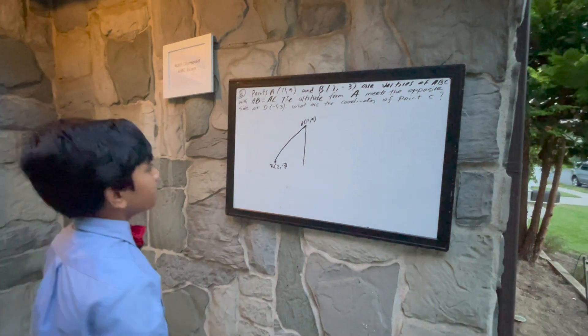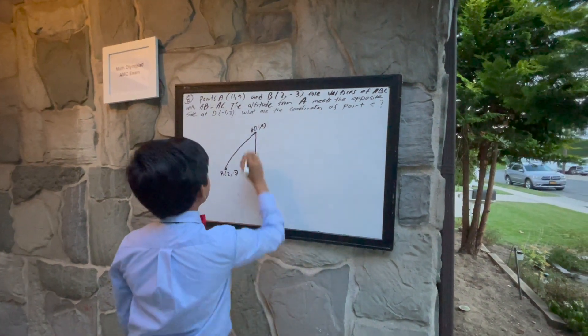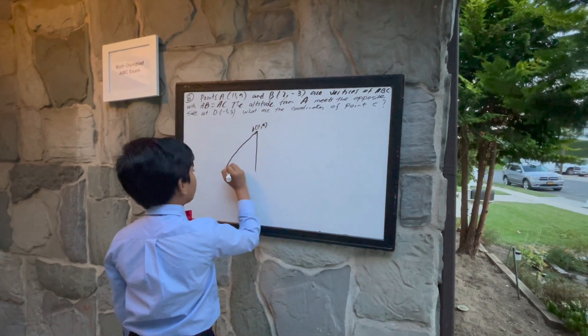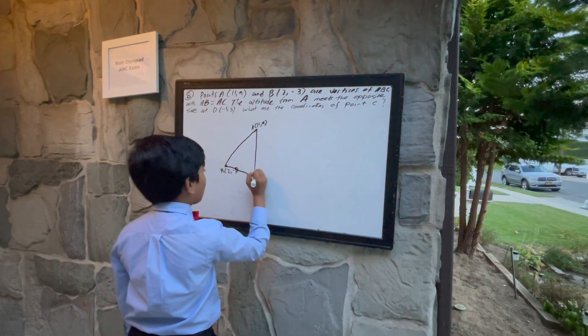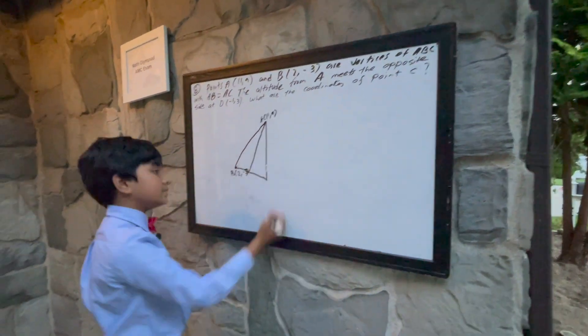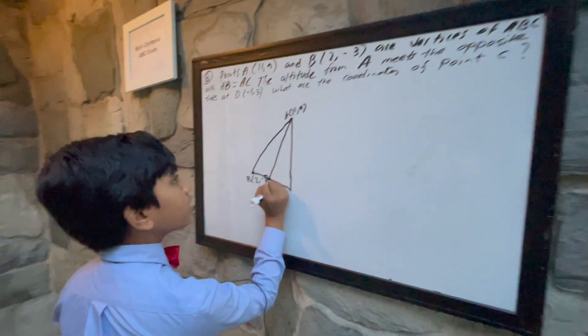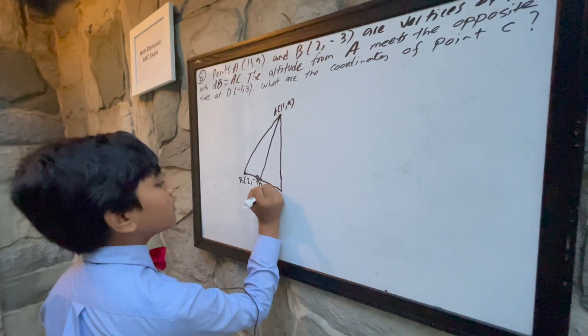D is the midpoint. The altitude from A meets the opposite side at D (-1, 3). Since it's an isosceles triangle, the altitude will be the midpoint. So D over here is the midpoint at (-1, 3).